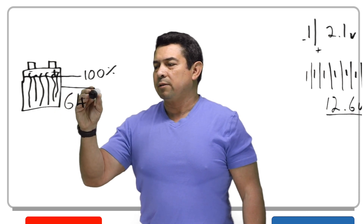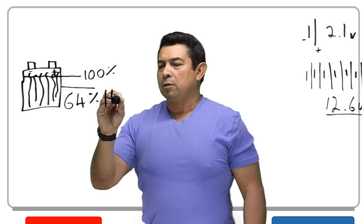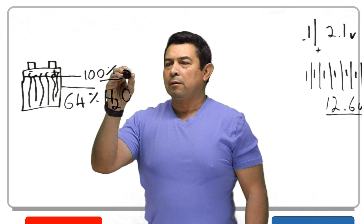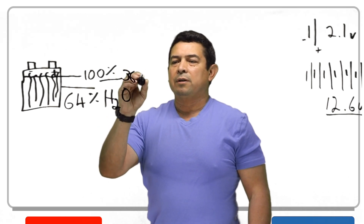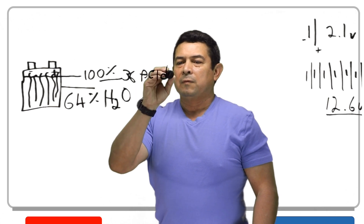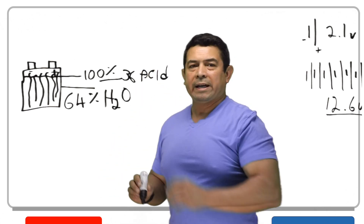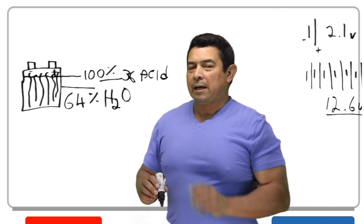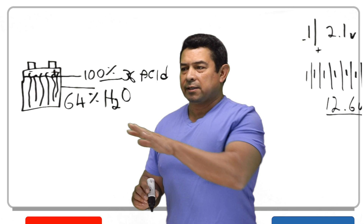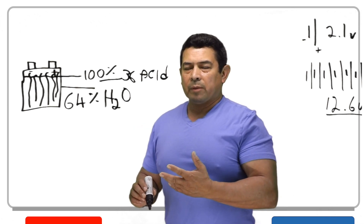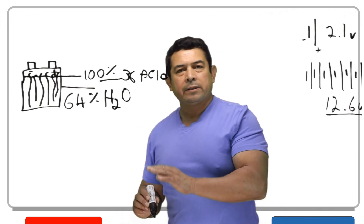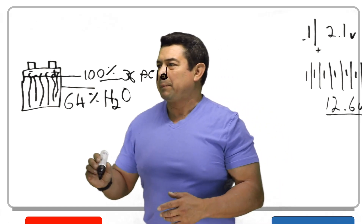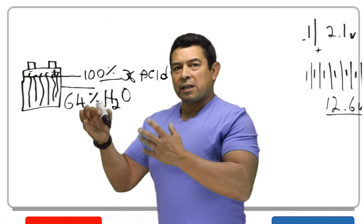The electrolyte solution is going to be made up of 64% H2O and 36% sulfuric acid. I'm not saying water — I'm saying H2O because this has to be pure water. Where are we going to get pure water? It is distilled water.